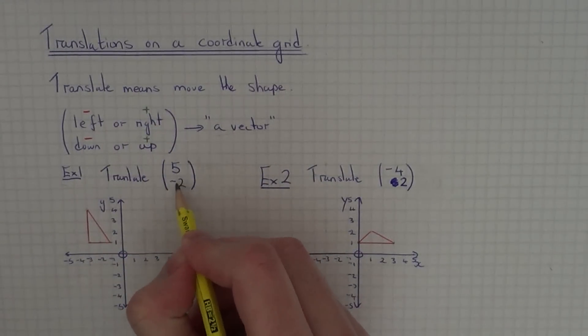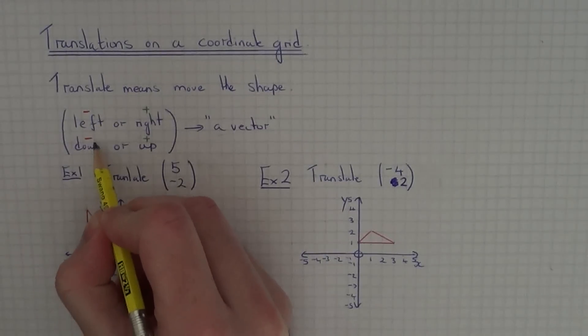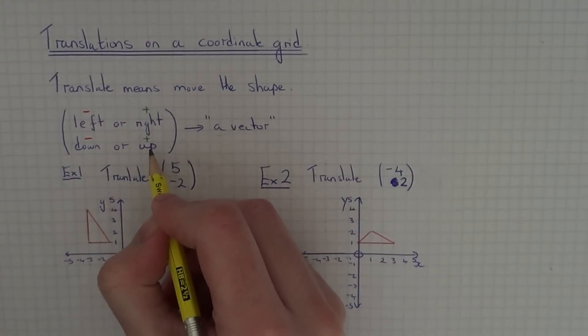The bottom number of the vector will tell you whether to move it down or up. If it is negative you move the shape down, if it is positive you move the shape up.